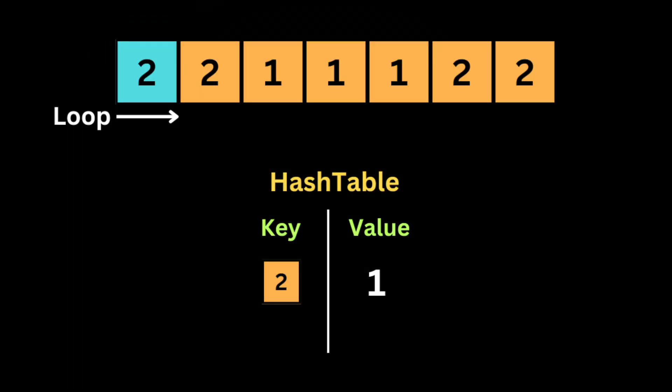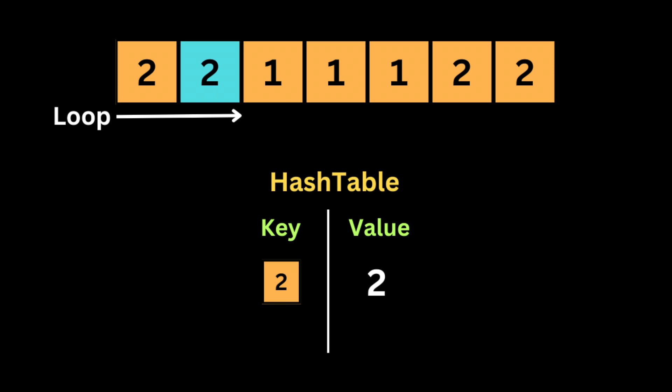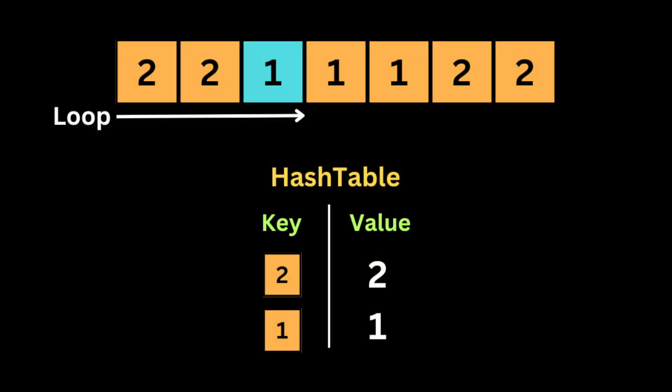Given this input array, the first thing we do is initialize a hash table, then loop over the input array. Each time we store the number as a key and the number of appearances as the value. We start at 2, put it as a key with value 1. Then we move to the next number — it's 2 again — so we check if it's already in the hash table and increment its count by 1.